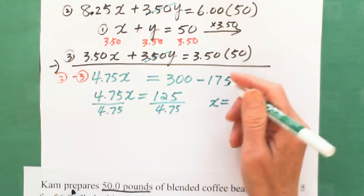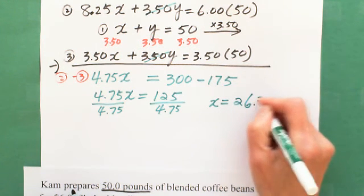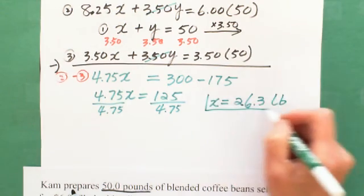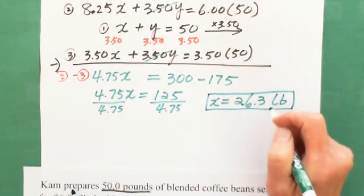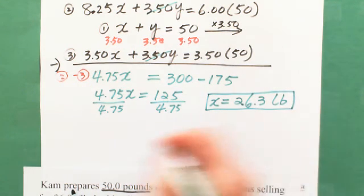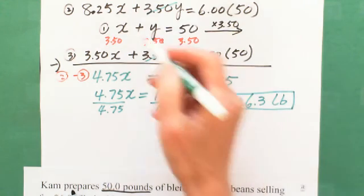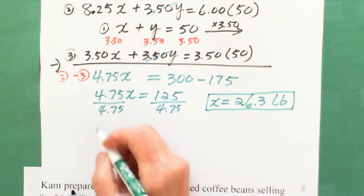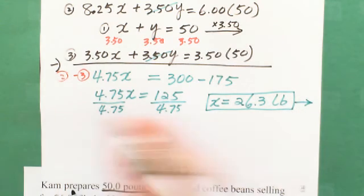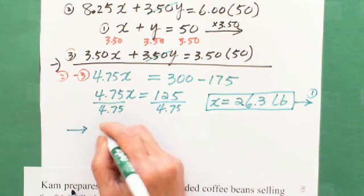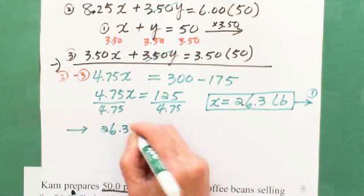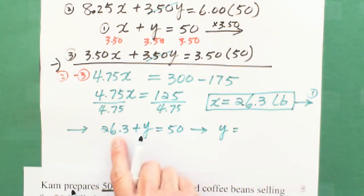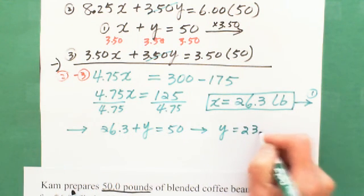So this is for X, which is the expensive one. And the cheaper one, we can plug this one into the first equation, X plus Y equals 50. X equals 26.3. So that's why we got 26.3 plus Y equals 50. So that's why we got Y equals 50 minus 26.3, which is 23.7.